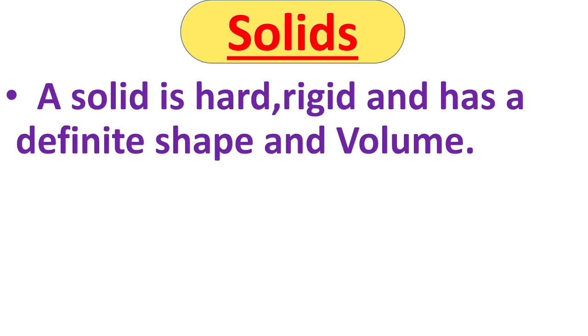Solids. Solids are hard and rigid. Here, rigid means unable to bend or we have to apply a force to change its shape. So a solid is hard, rigid and has a definite shape and volume.